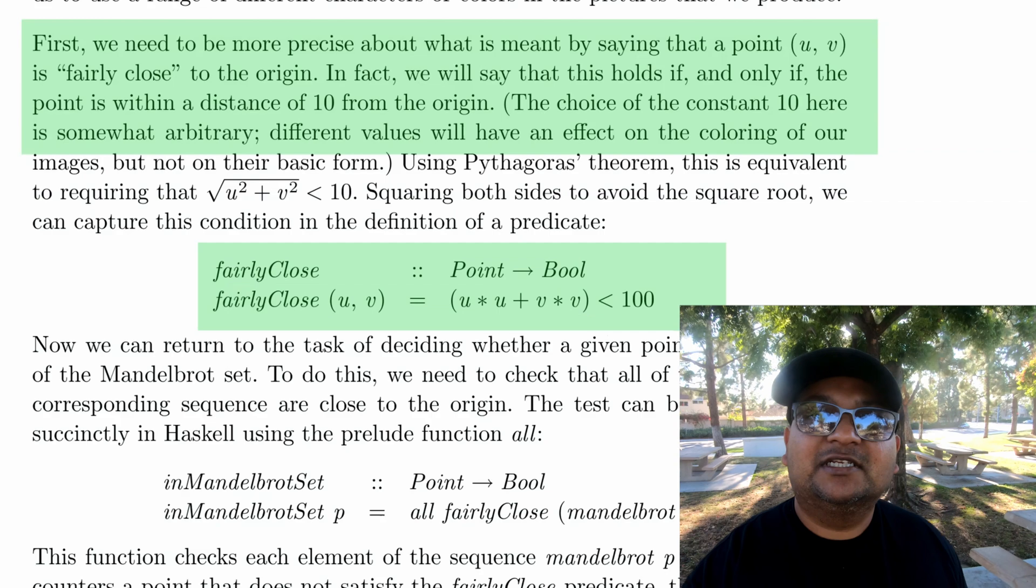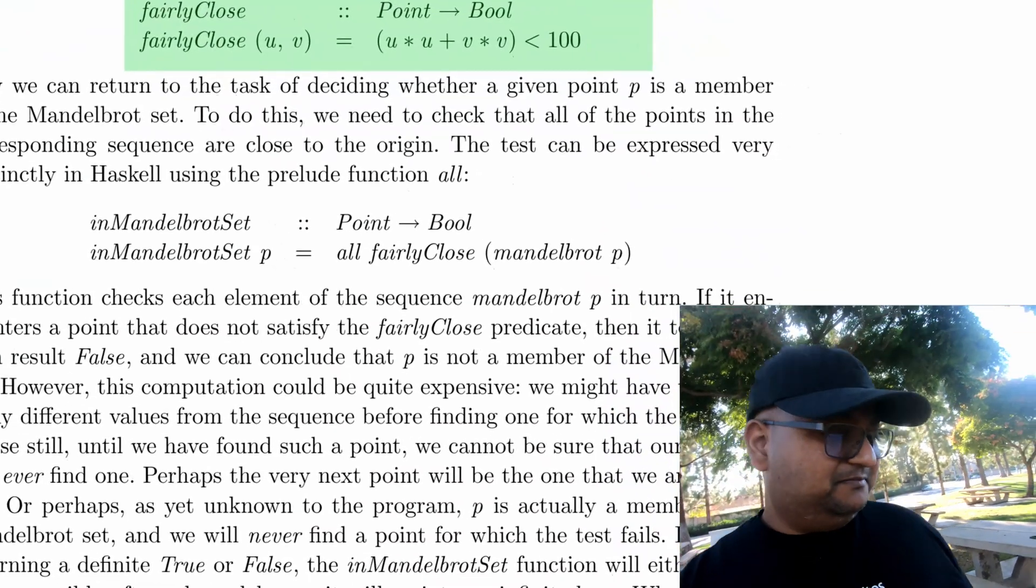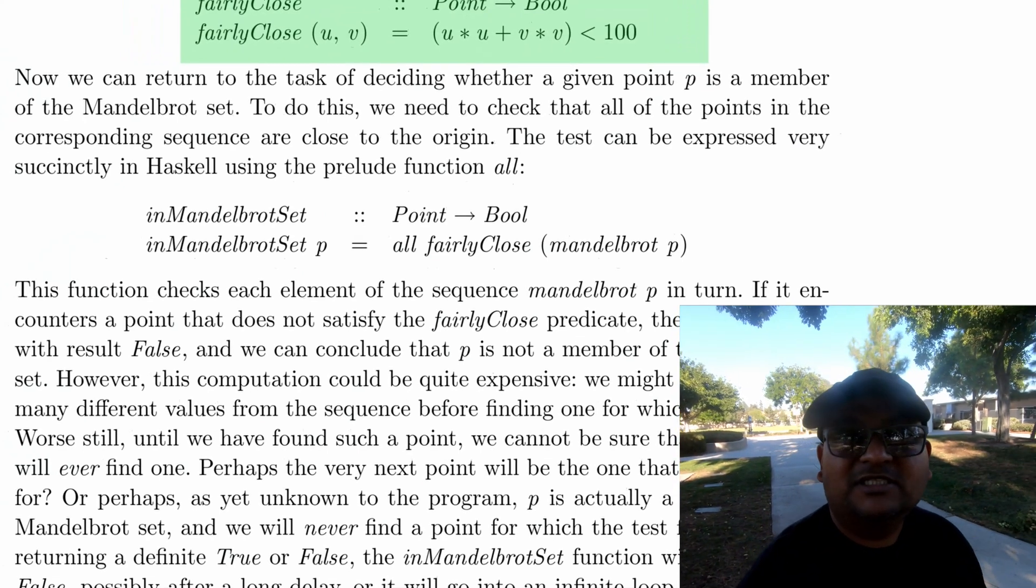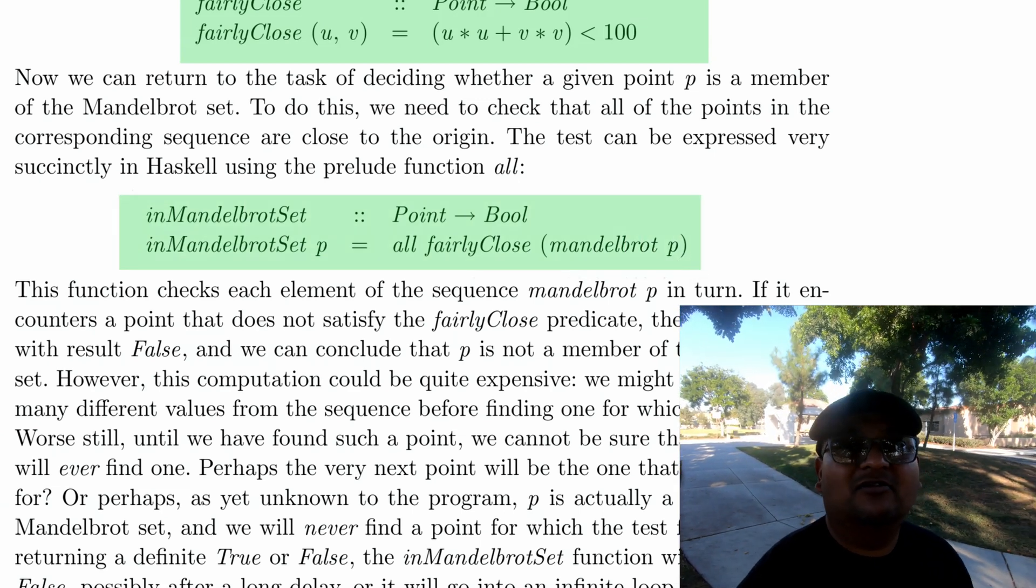So let's just say we want these points to be within a distance 10 of the origin. And like we said before, a point is in the Mandelbrot set if all the points in the sequence are close to the origin.